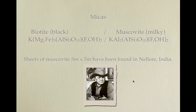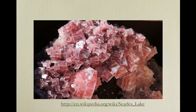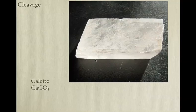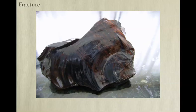Sheets of mica 5 meters by 3 meters have been found in lower India. Minerals will tend to cleave if their molecules or atoms line up consistently in the same direction. You can get salt to split along the same faces that make the crystals. Calcite — you can split it again and again along these same faces; it cleaves or splits.